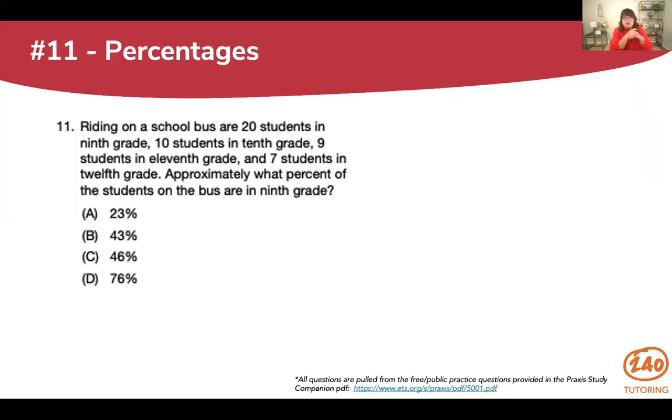Riding on a school bus are 20 students in 9th grade, 10 students in 10th grade, 9 students in 11th grade, and 7 students in 12th grade. Approximately what percentage of the students on the bus are in 9th grade. So total, we're going to need, any time you have a percentage, you have a portion of a total, a portion of a total. So we've got to figure out the total first. I'm going to take all those numbers. I have 20, 10, 9, and 7. When you add all of those up, you're going to get 46. You could do that on a calculator. You could do it by pencil. To me, they're about the same for this basic math.